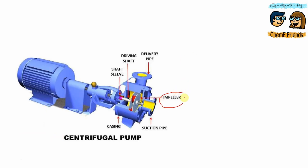Let us see the main components of the pump. First, the impeller — it is a rotor which is used to increase the kinetic energy of flow. Then, casing — it can be of two types: volute and vortex. Casing contains the liquid and acts as a vessel that directs the flow of liquid in and out of the pump. Then, the shaft — the impeller is mounted on the shaft and it is connected to the external source of energy. Delivery pipe — it is connected at its lower end to the outlet of the pump and delivers the liquid to the required height. Suction pipe — it is used to transfer the fluid from the source to the pump.